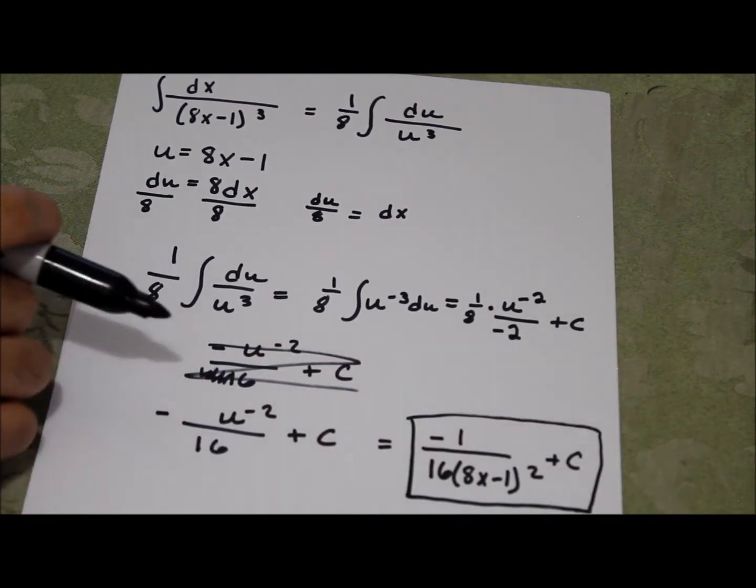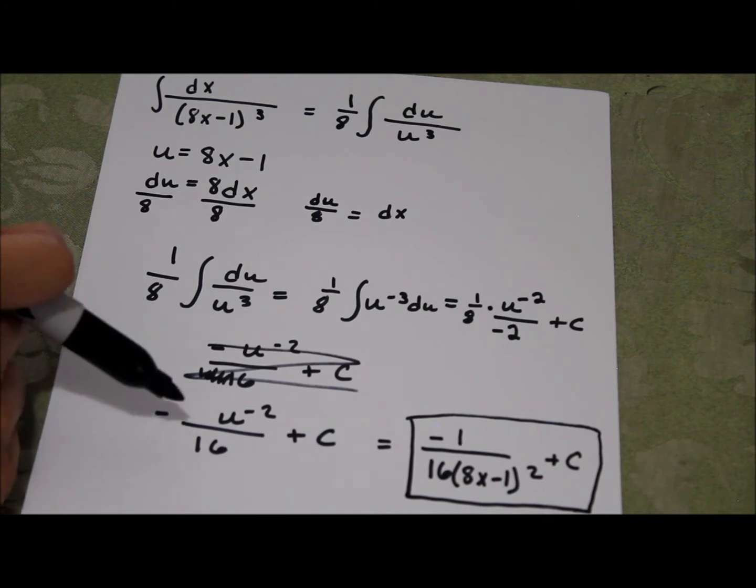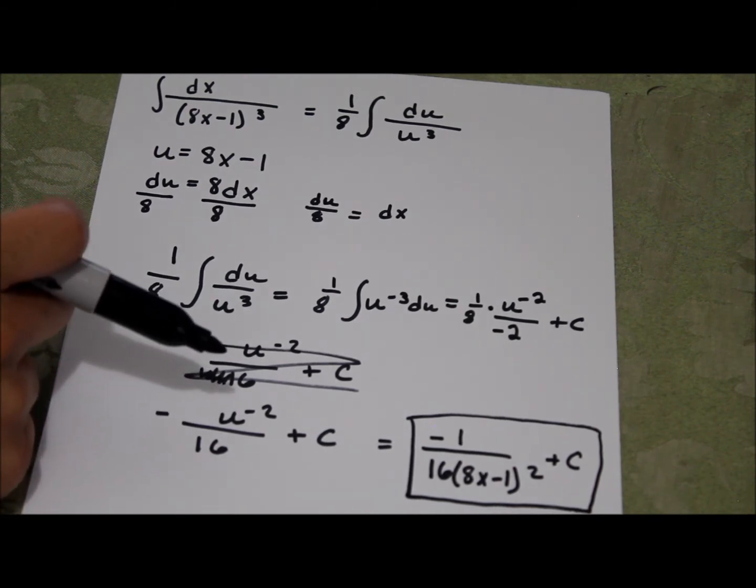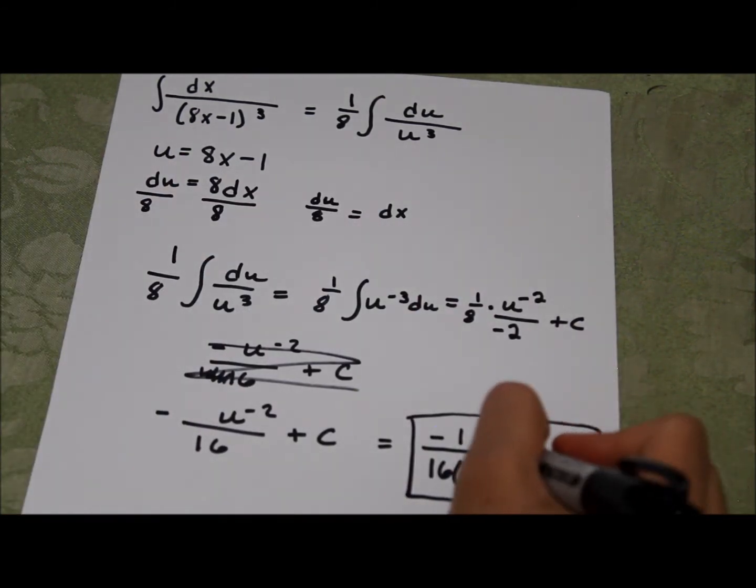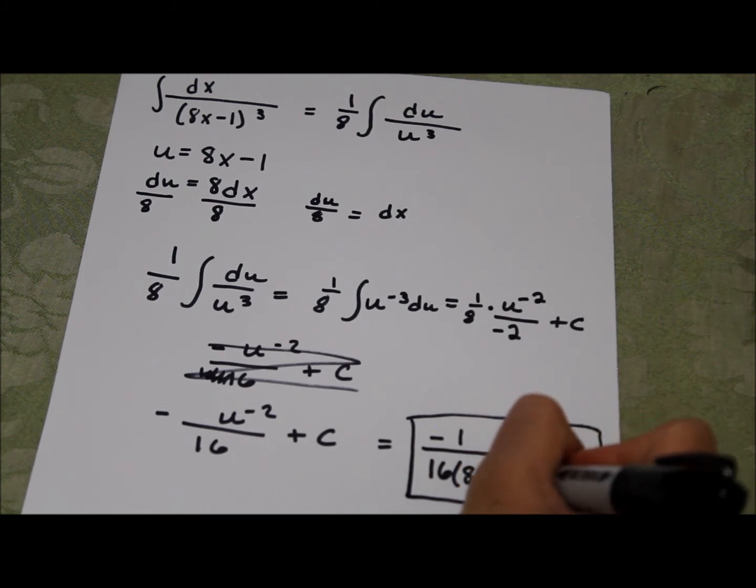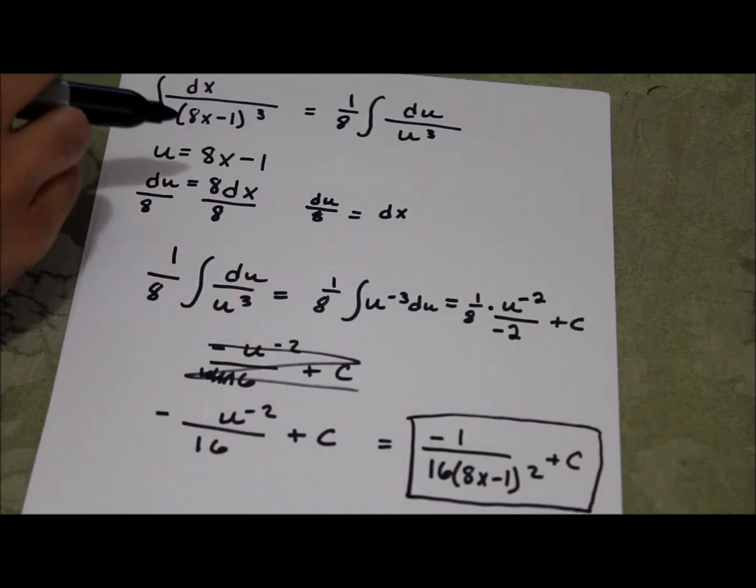Again, all I did was u to the negative 2 is the same as 1 over u squared. So this is 1 over u squared, and I just substituted u with 8x minus 1.